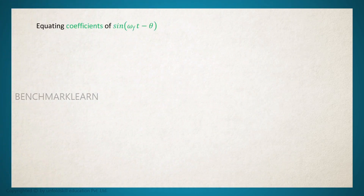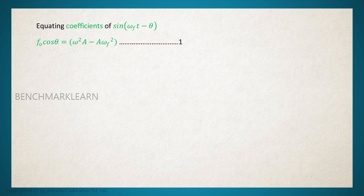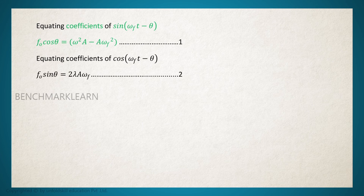We can equate the coefficients of sin(omega_f t minus theta) and cos(omega_f t minus theta). Equating the coefficient of sin(omega_f t minus theta), we get: f₀ cos(theta) equals omega² a minus a omega_f². Equating the coefficient of cos(omega_f t minus theta), we get: f₀ sin(theta) equals 2 lambda a omega_f. We now have two equations, one with f₀ cos(theta) and the other with f₀ sin(theta).